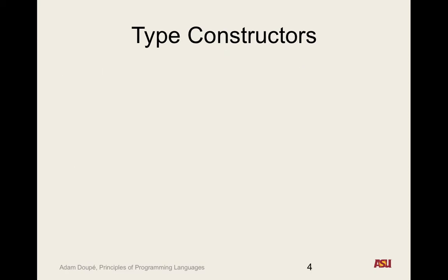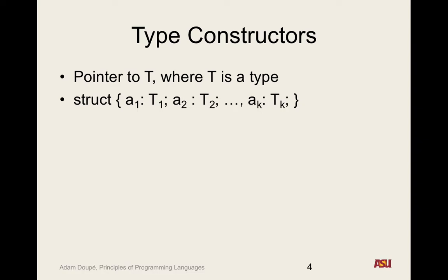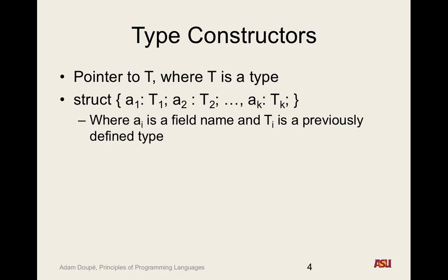So now we're talking about type constructors — how do we as a programmer declare new types in the system? One is we can use a basic type. Another is we can declare a pointer to some type T. Next, we're going to talk about structs, where we have curly braces, various fields a_i through a_k, and each of those fields has an associated type t_i.